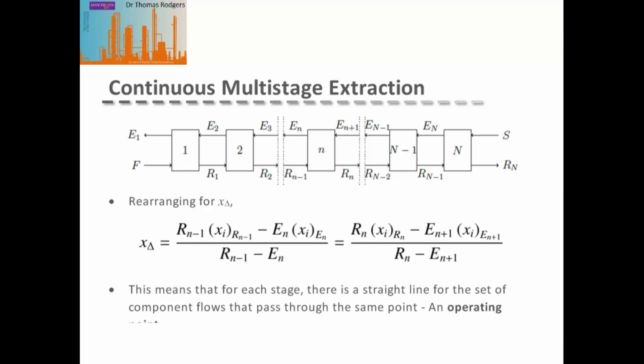We can now take our overall mass balance for stage N and our component mass balance for stage N and rearrange these together to produce an equation for the difference in mass fraction between the flows on each stage. Therefore, for each stage, there must be a straight line for the set of component flows that pass through the same point. This point can be thought of as an operating point, and this will become more apparent when we do our example on a ternary phase diagram.